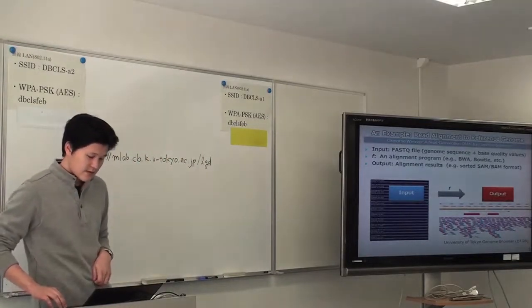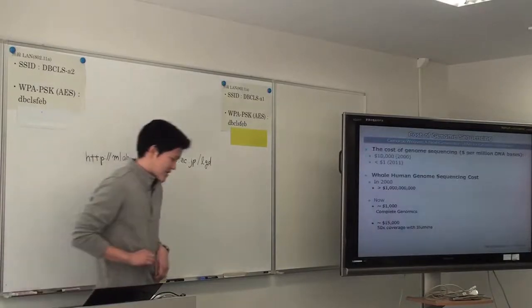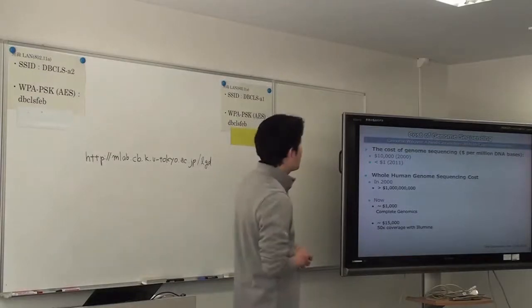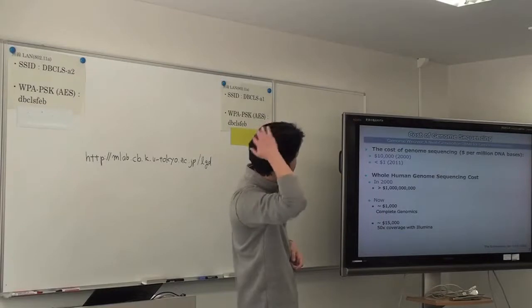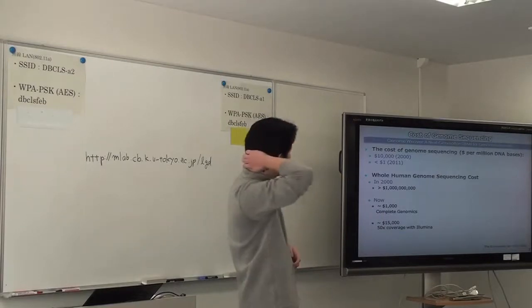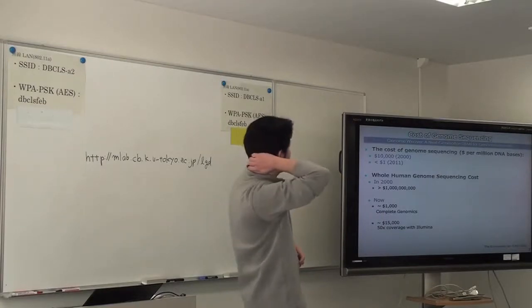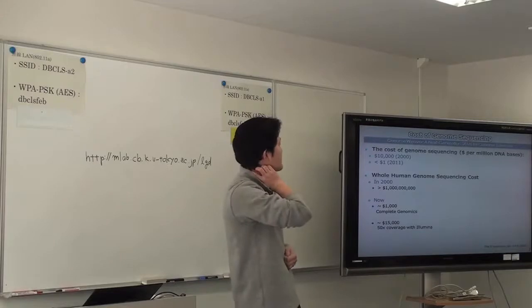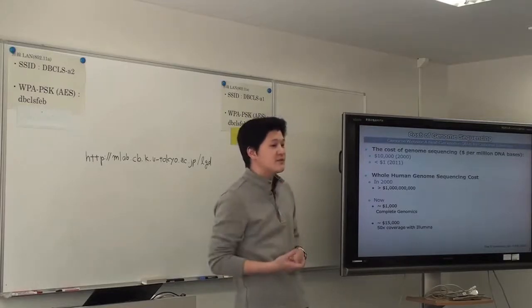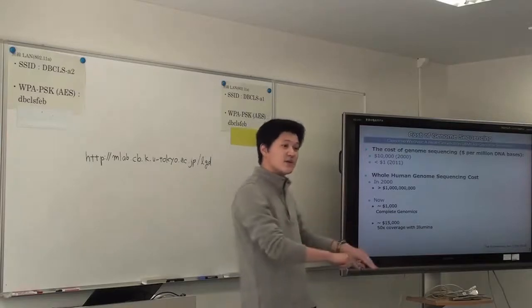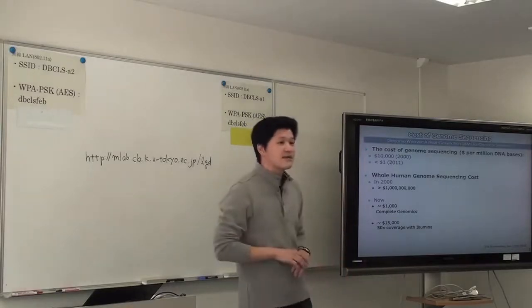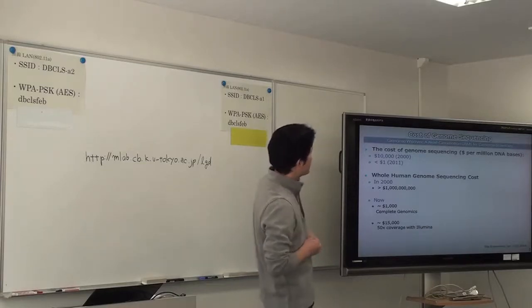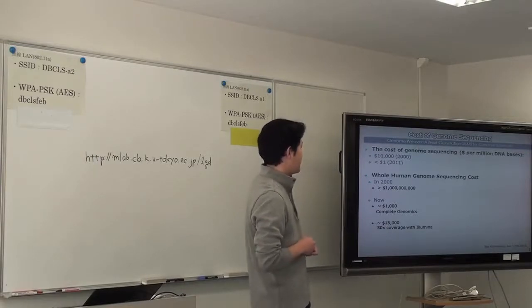To show what kind of data is produced by next generation sequencers, I want to introduce the cost of genome sequencing. In 2000, the cost was $10,000 per megabase. But the cost dropped sharply around 2010–2011, making whole-genome sequencing far more accessible.